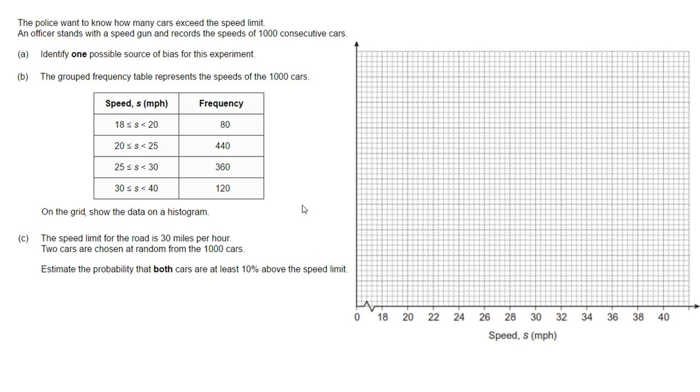Here we have a GCSE exam question. Fairly straightforward. We have to draw a histogram and think about bias, but Part C gets quite tricky because they move into the area of probability and interpreting the histogram, and that requires a little bit more thinking.